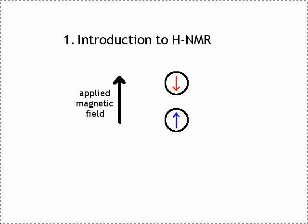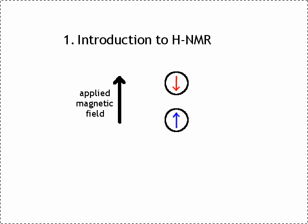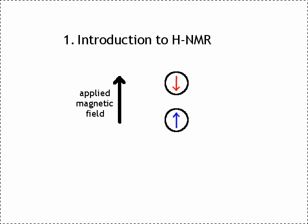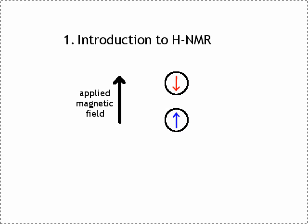Introduction to HNMR. So, the nucleus of a hydrogen atom is simply a proton, and this proton can exist in two spin states. It can be spin up or spin down, rather like an electron can be spin up or spin down.